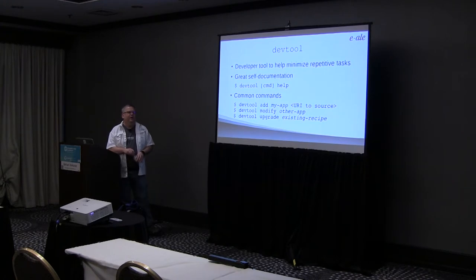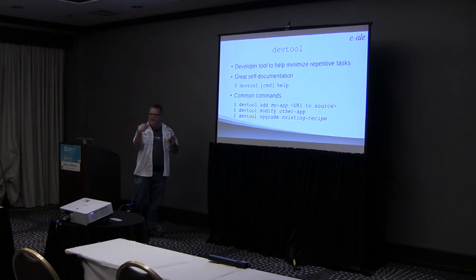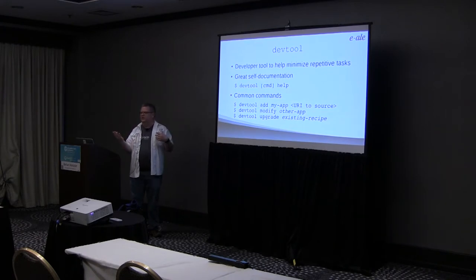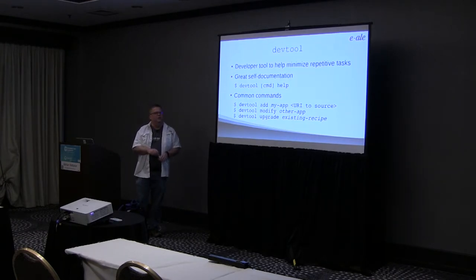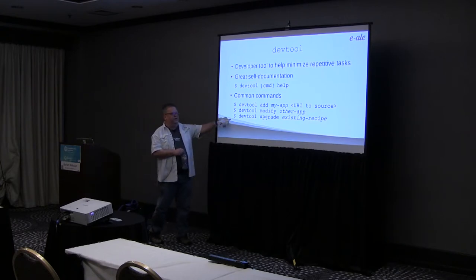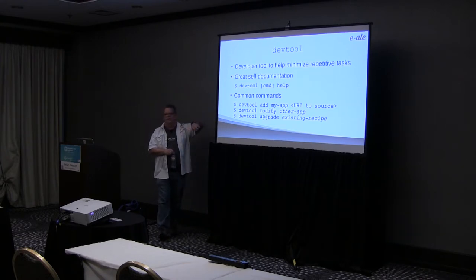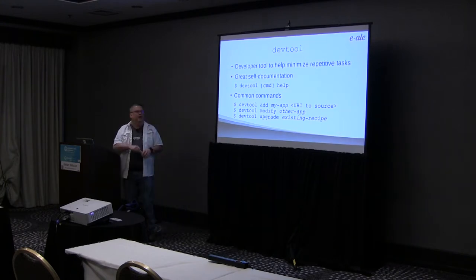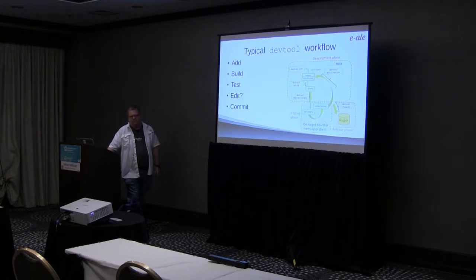If you found a recipe that doesn't work the way you wanted, you can use "devtool modify" — taking something that already exists and letting you go in and edit the source code. It knows how to generate patches and will put those patches in with it. So you could patch the kernel — we had to patch the kernel for the PocketBeagle to get the device tree to work — or patch U-Boot. My personal favorite is "devtool upgrade" — I maintain the meta-python and meta-perl layers, and you can just say you want to update a package like python-pytest and it'll grab the latest version from the net and create all the necessary recipe variables.